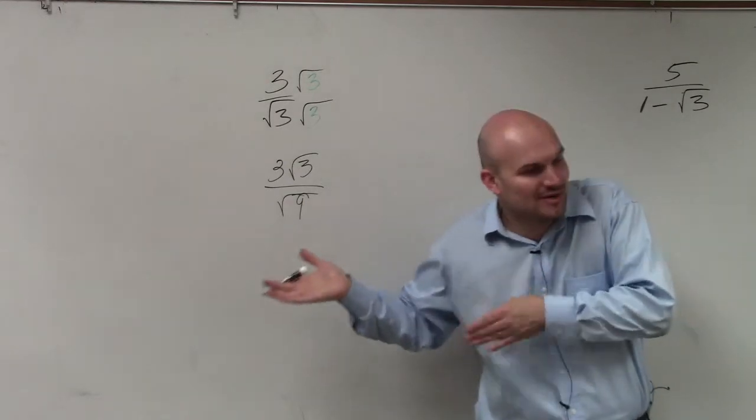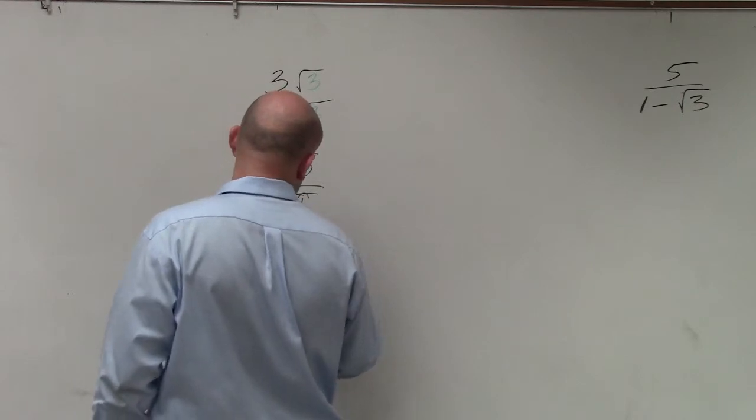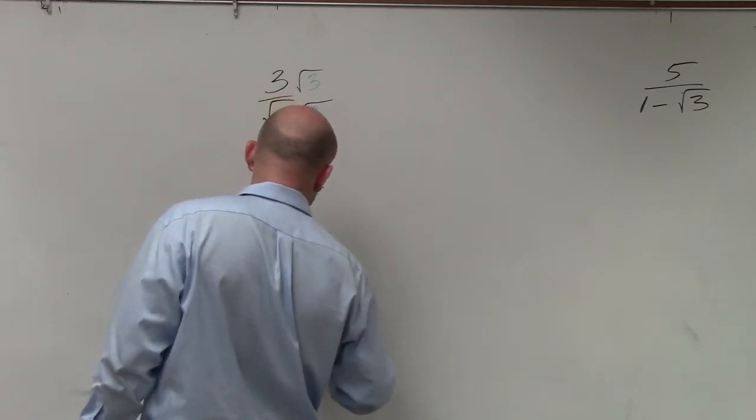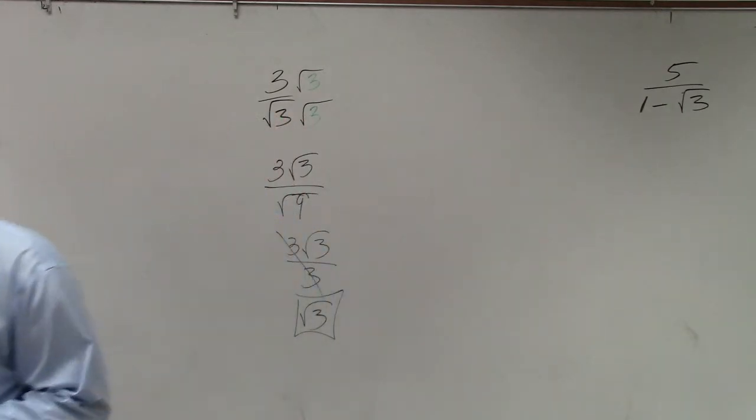Now do we have a square number that we're trying to take the square root of? Yes. So my final answer is 3 square root of 3 over 3. The 3's divide to 1. And I have a final simplified answer of just square root of 3. All right.